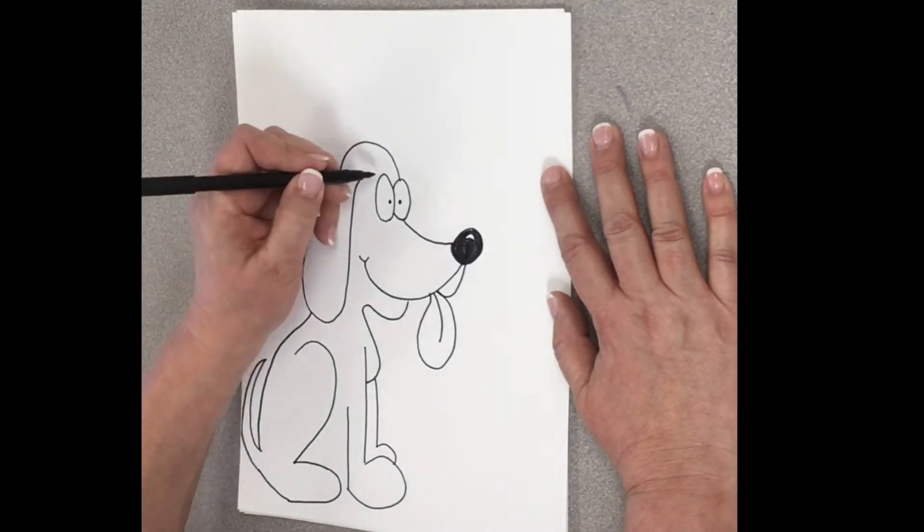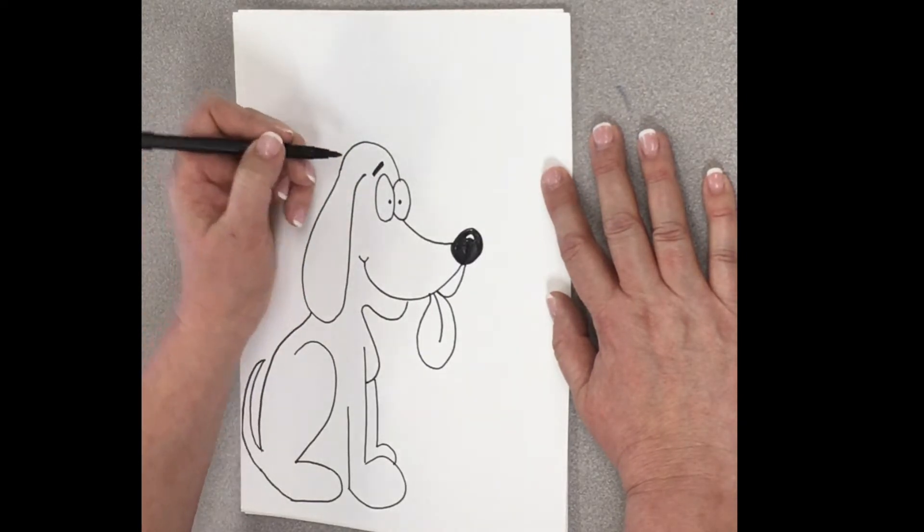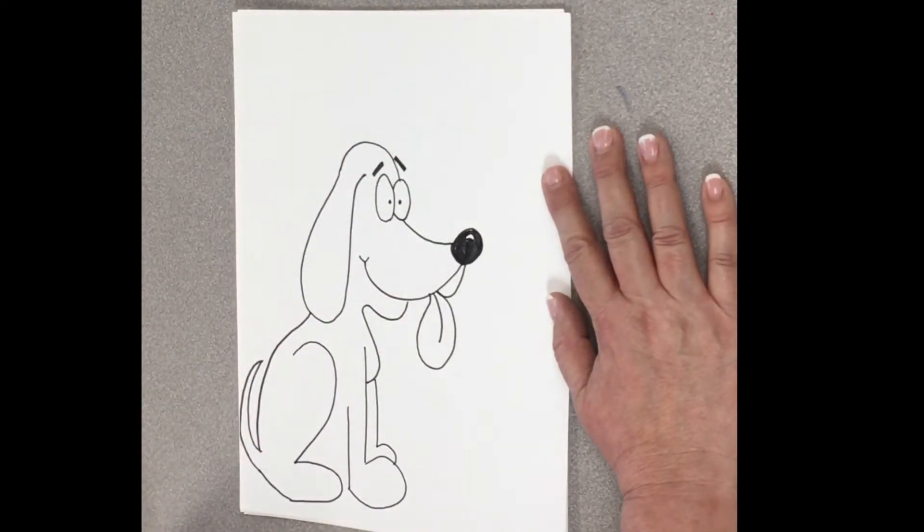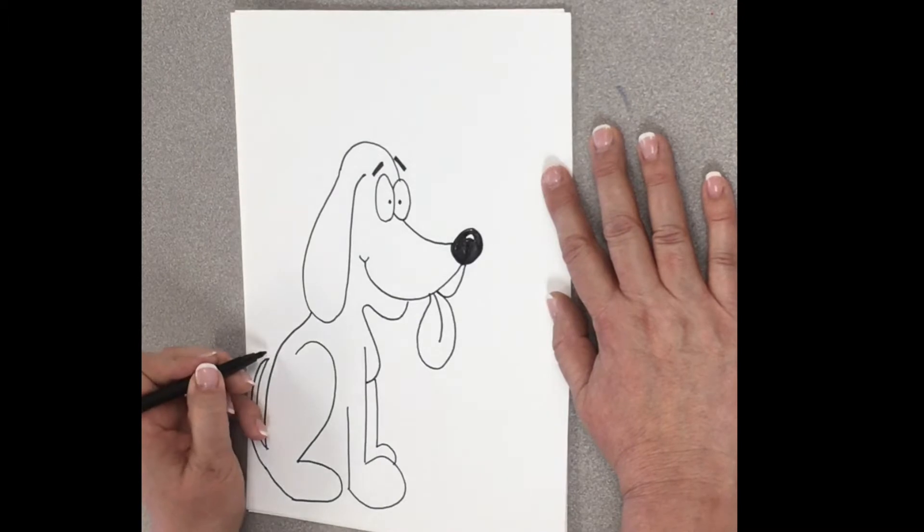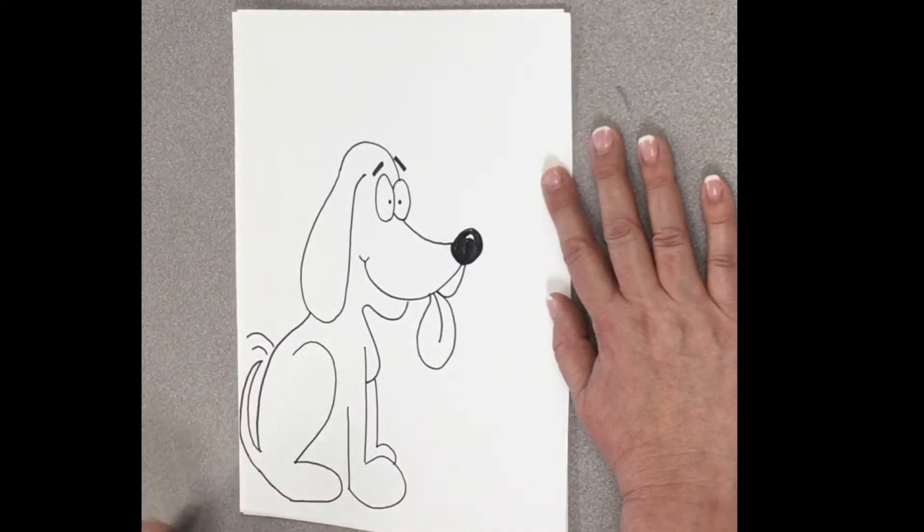All right. And, I think I'm going to put some little eyebrows on him here because he's like, I think I'm going to get some kibbles. There we go.